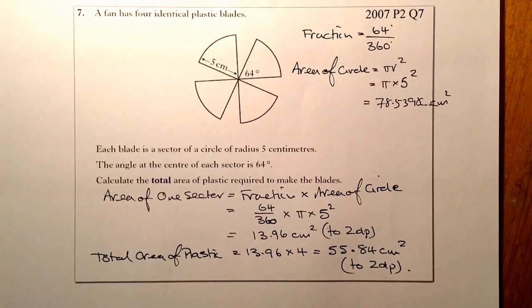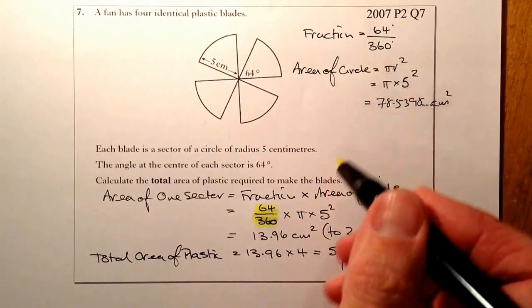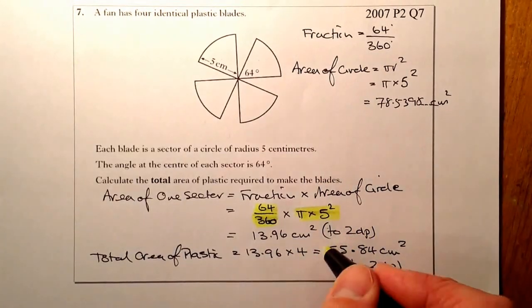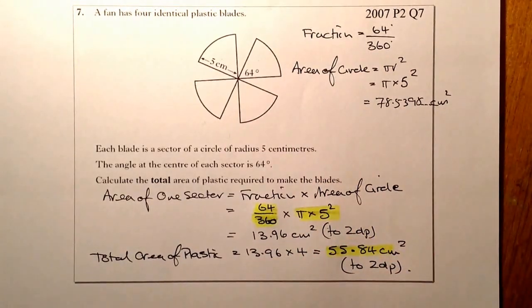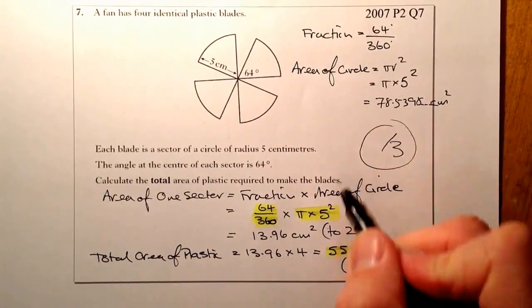Okay, so this will be worth three marks. One mark for getting the fraction correct, one mark for getting the area of the circle, and one mark for getting your final answer. That's out of three marks.